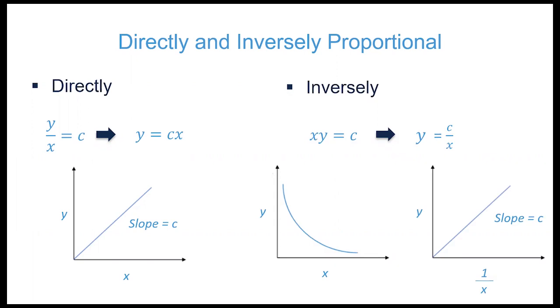If it's an inverse relationship, the product of Y and X is a constant, or we can rearrange our equation to get Y equals C over X. We can plot this on a Y versus X axis and we see that Y, as it decreases, X values increase. If we re-plot Y versus 1 over X, we see the straight line with the slope as our constant. One variable is proportional to the inverse of another.